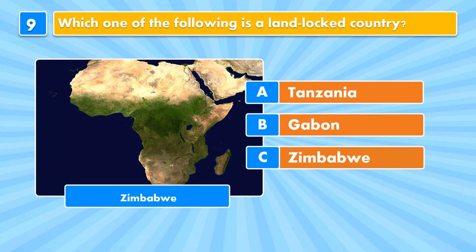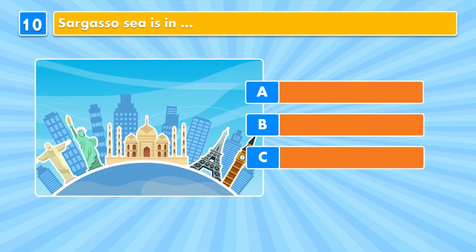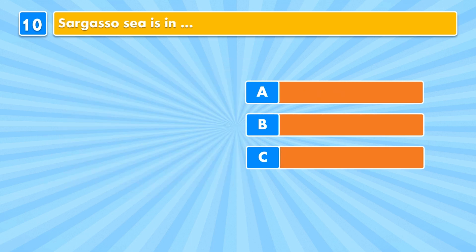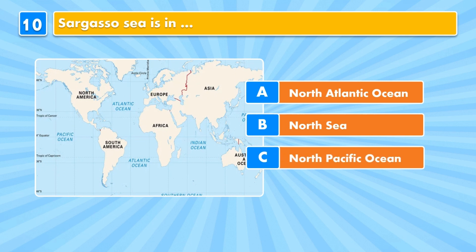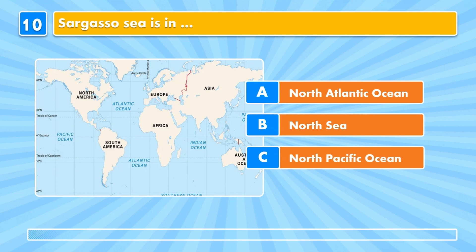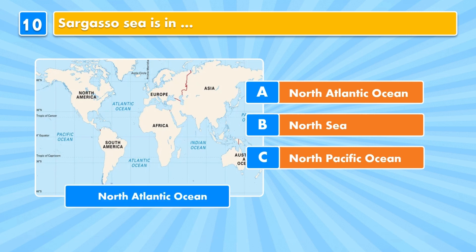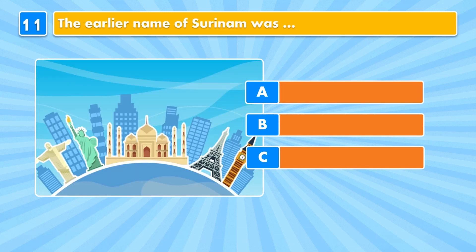Answer: Zimbabwe. Question ten: the Sargasso Sea is in the North Atlantic Ocean, North Sea, or North Pacific Ocean? It's the North Atlantic Ocean.